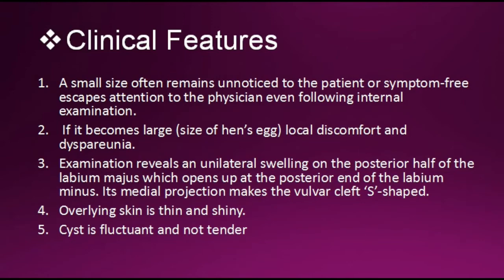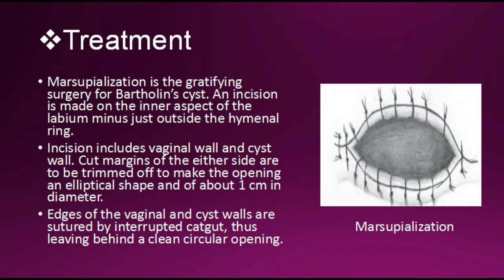The medial projection makes the vulvar cleft S-shaped. The overlying skin is thin and shiny. The cyst is fluctuant and non-tender. The treatment: marsupialization is the preferred surgery for Bartholin's cyst. An incision is made on the inner aspect of the labium minus just outside the hymenal ring. The incision includes the vaginal wall and cyst wall; cut margins are trimmed to make the opening an elliptical shape of about one centimeter in diameter. The edges of the vaginal and cyst walls are sutured by interrupted catgut, leaving behind a clean circular opening.